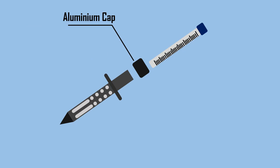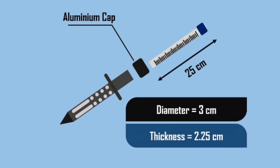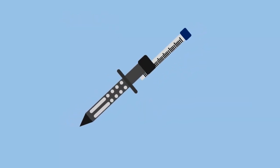An aluminium cap, 3 cm in diameter and 2.25 cm long, has a small hole and a screw that can be used to set and adjust the reference zero.